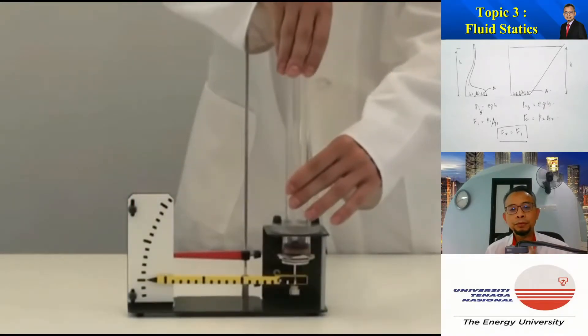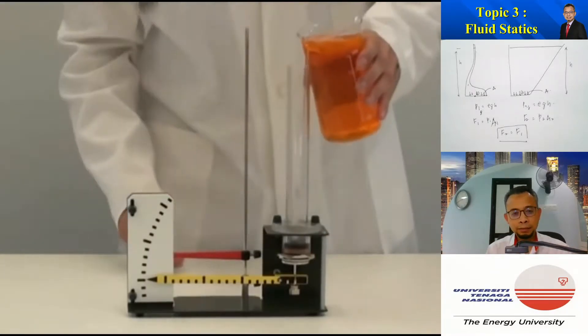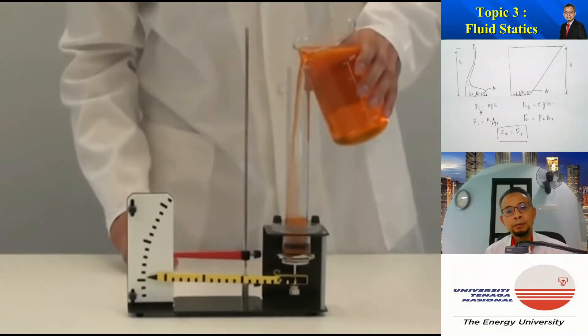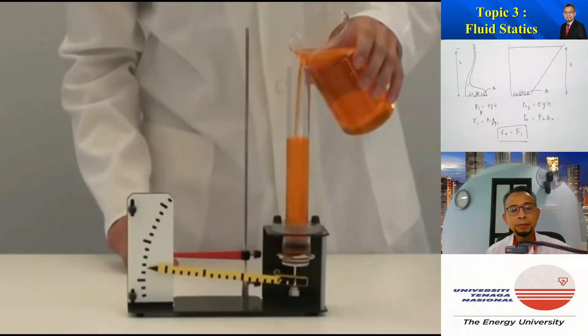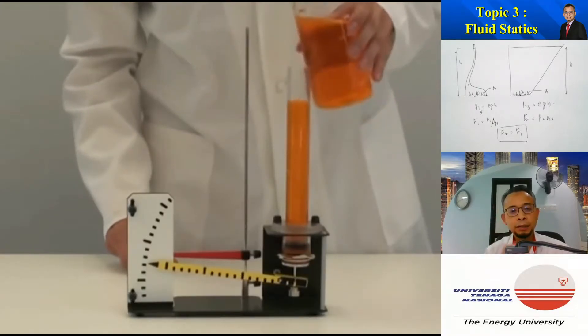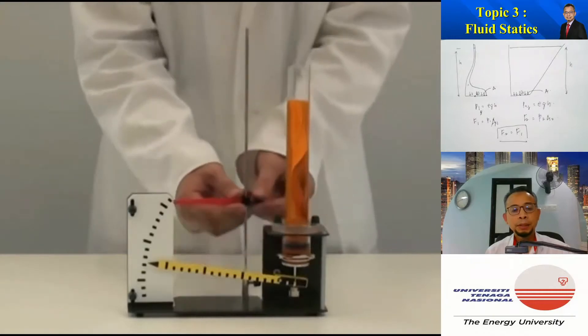So we have three different container shapes. One is just a tube which has a constant diameter. So this person is pouring liquid up to a certain level.